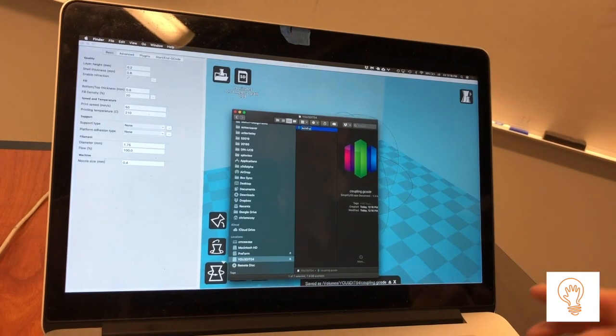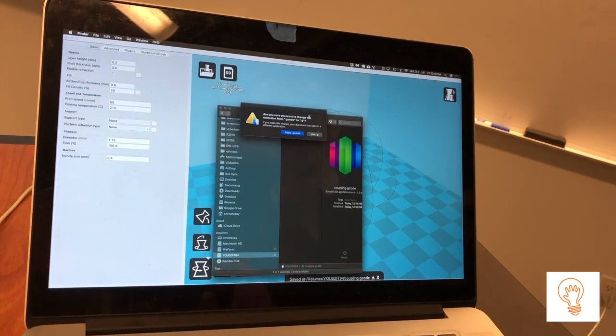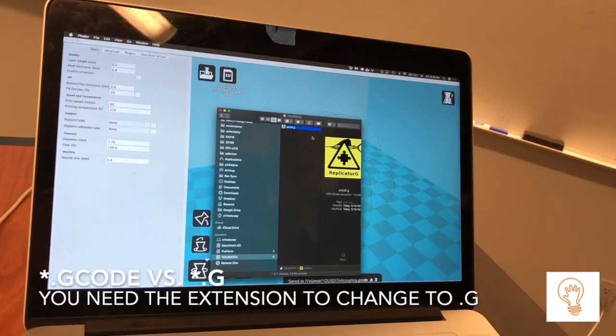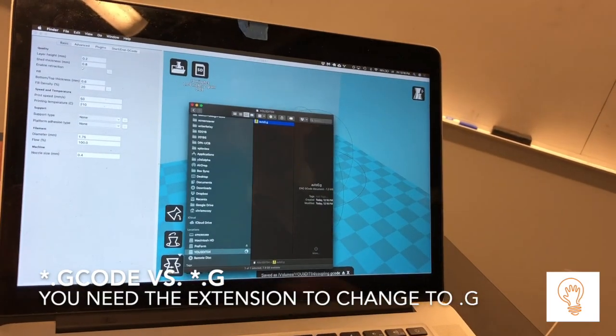We're going to rename this file to auto0.g. It's going to ask are you sure you want to change, say yes, and then you eject your memory card. Now we're going to pull this out and let it eject.